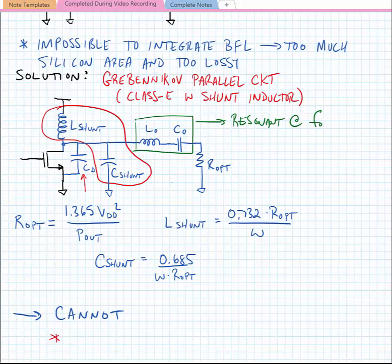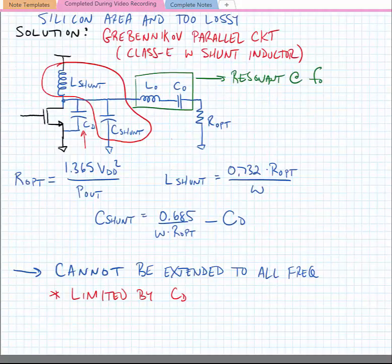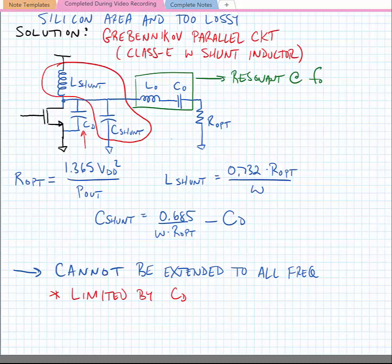Now we'll note that the C-shunt needs to also include any capacitance that's due to parasitic at the drain of the transistor. Now because of the drain capacitance, this technique cannot be extended to all frequencies. It's limited by CD. In other words, C-shunt needs to have some value, and if CD is bigger than C-shunt, then this doesn't work optimally.